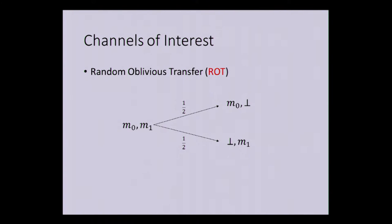The third channel is the random oblivious transfer channel, analogous to random oblivious transfer. Here, the sender sends in two strings M0 and M1. The receiver with probability half receives (M0, ⊥), and with probability half receives (⊥, M1). So the receiver gets only one of the strings, and the sender does not learn which string it got. That's the security property. There are other channels we consider in the paper, but for the talk I'll focus on these three.